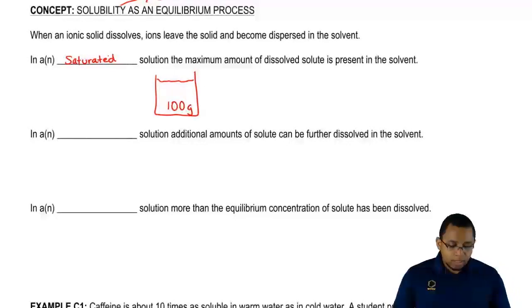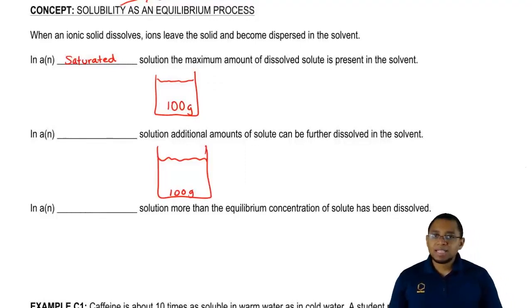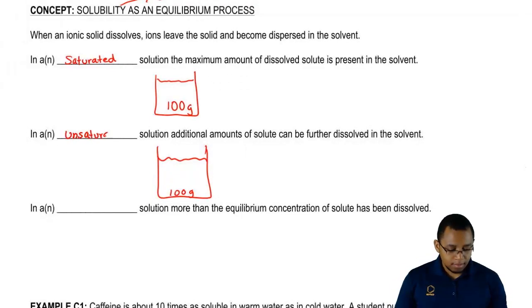In an unsaturated solution, additional amounts of solute can be further dissolved in the solvent. We have our same bucket of water that can dissolve 100 grams. But if I take 90 grams of solute and dump it in there, all 90 grams will completely dissolve and we still have room to dissolve 10 more grams. This solution is unsaturated because it still has room to dissolve more solute.